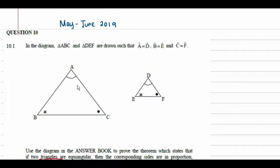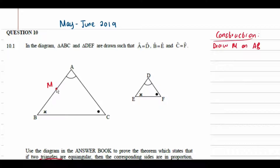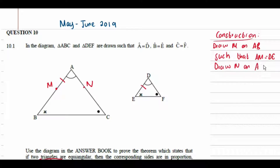Let's start. We're going to draw a point M on AB — always make sure you write down any constructions you make. Construction: we draw M on AB such that AM equals DE. We also draw another point N on AC such that AN equals DF.